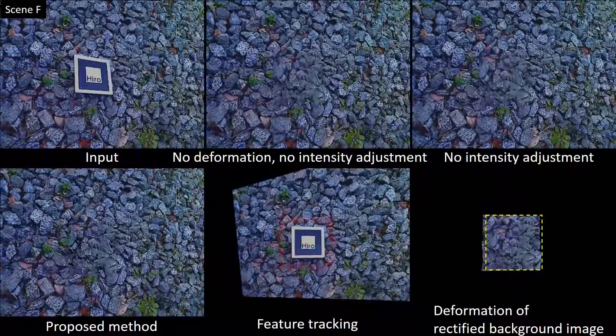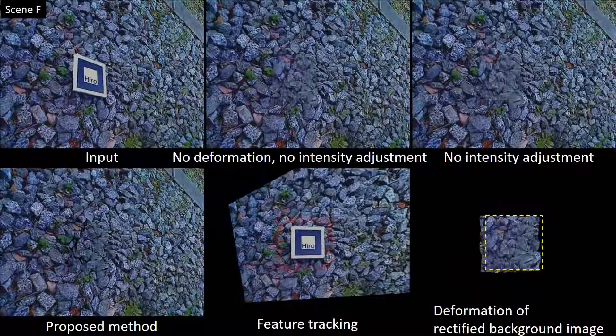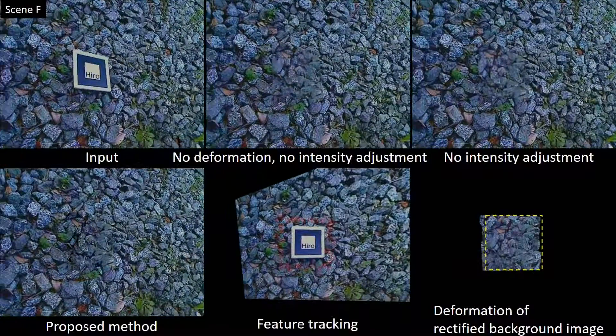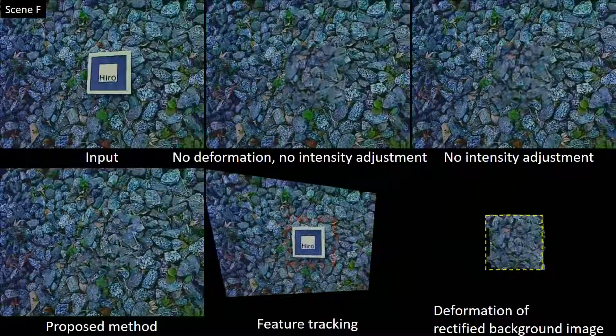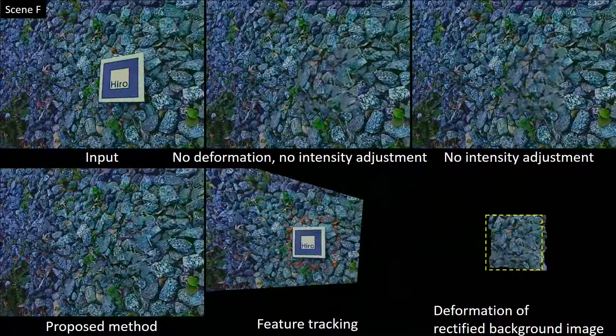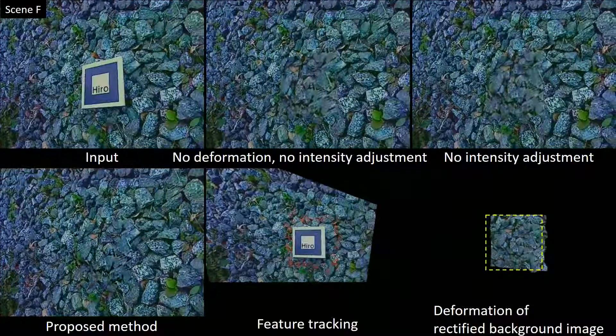In scene F, the marker is placed on an uneven surface of stones. The result of the baseline approach looks like a floating, stone-textured plane. In contrast, our method's results are better fit to the surroundings.